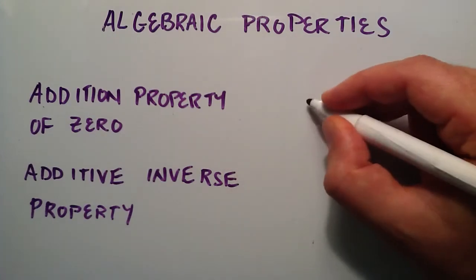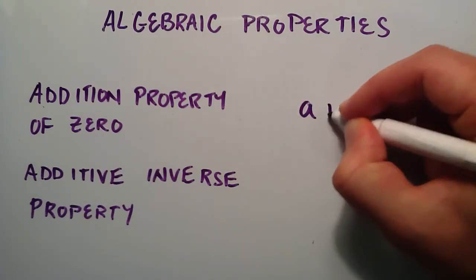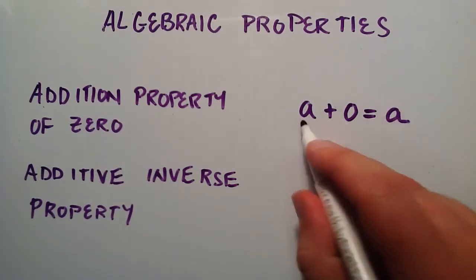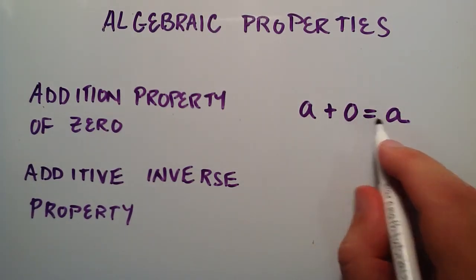So the first property basically says if we have some number a, and we add zero to that number, then we still have the number a. We had something, we added nothing to it, we still have the same amount.